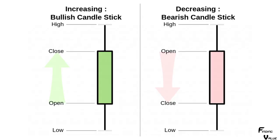One candlestick represents an entire trading day. You've got a high, a low, an opening price, and a closing price. Throughout the day it might open here, go down, bottom out, go all the way up to the top, but then come back down and close right here. When it's green, it means it closed higher than it opened. A down day is the opposite - the opening price was higher than the closing price.